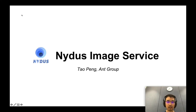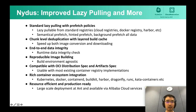Hi everyone, my name is Tao Pan. I'm a staff engineer at Ant Group. I'm going to introduce the NIDAS image service. The NIDAS image service is an image acceleration service that we built in-house at Ant Group and deployed largely on our production system. When we started building NIDAS, we wanted to support lazy pulling, but we also wanted more. Here is the feature list we have in NIDAS.